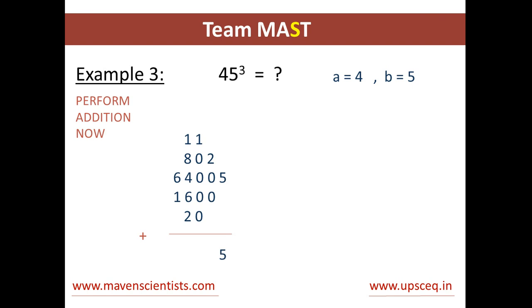Now we'll just add these values: 5, then we get 2, then we get 1, then we add 1 plus 8 plus 4 plus 6 plus 2 gives 21, and then we add 6 plus 1 plus 2 gives us 9. So the answer comes out to 91125. Hence, the cube of 45 equals 91125. Pretty simple.